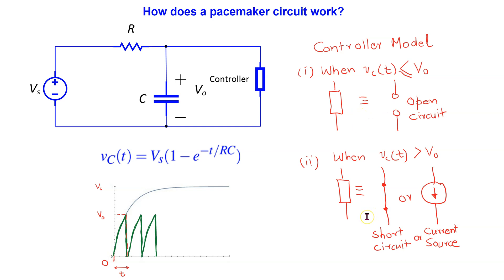However, when the voltage across the capacitor reaches a certain value V0, the controller is triggered and it starts to act as a short circuit or a current source, allowing the capacitor to discharge. This discharge time is considered negligible compared to the charging time. Once the capacitor discharges, the controller starts to act like an open circuit again, allowing the capacitor to recharge.